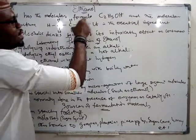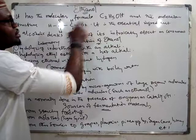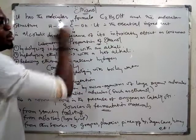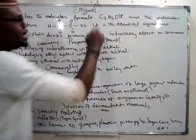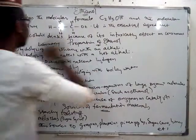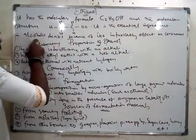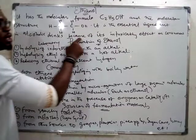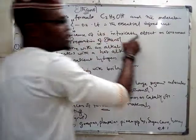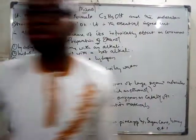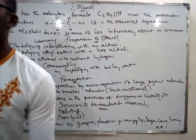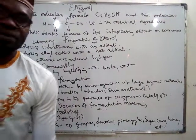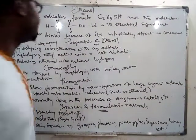The molecular structure shows a two-carbon chain with the functional group –OH. It is the essential ingredient in alcoholic drinks because of its intoxicating effect on consumers.